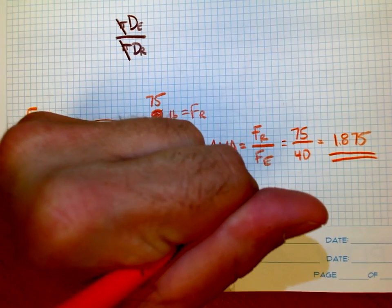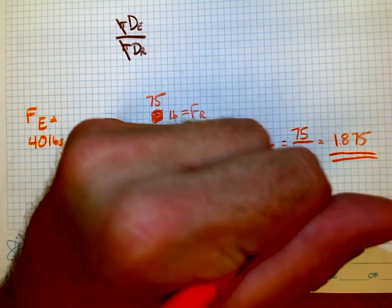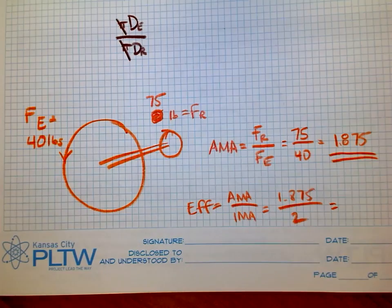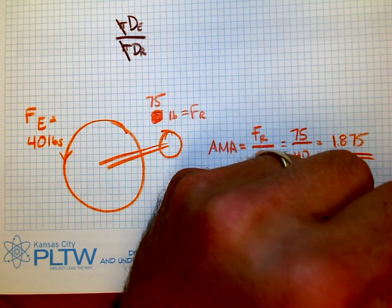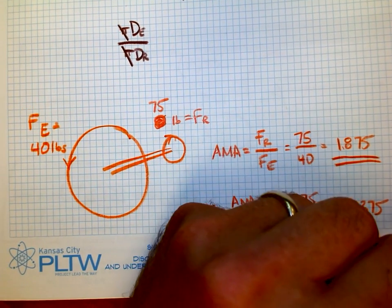And when I ask you to figure out the efficiency, we take AMA over IMA. So, I have 1.875 on top, and I have a 2 on bottom. If I take 1.875 and divide it by 2, I get 0.9375. That is 93.75% efficient.